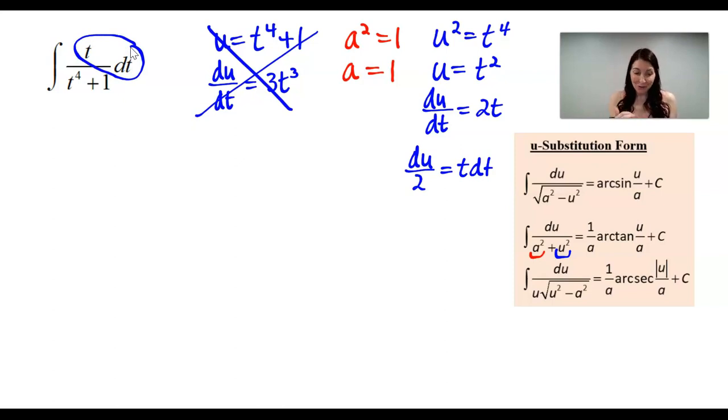Alright, so now I can rewrite this. If you take a look at this, that t dt, I can replace that with du over 2. And then this is equivalent to 1 over u squared plus a squared, which is going to be, when I take the integral, an arc tangent problem. I'm going to bring out the 1 half in front from the du over 2, and now I am ready to integrate this.